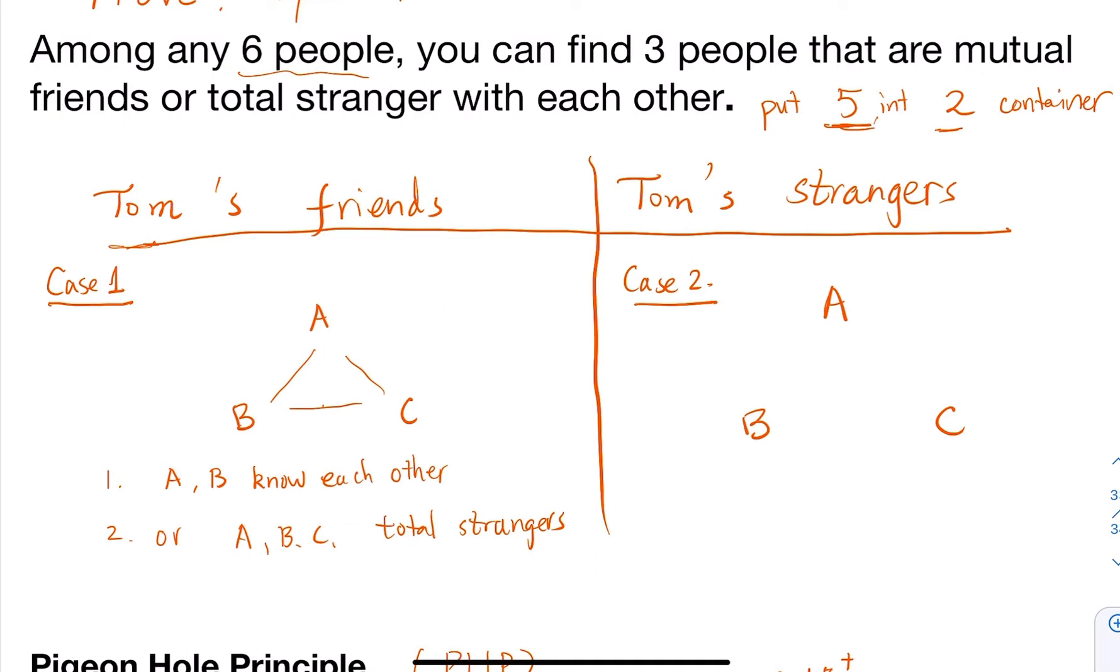We can find three strangers, or we found three friends earlier - if one pair knows each other, then with Tom we have three friends. Now let's think about the other case: if there are three people who are all strangers with Tom.